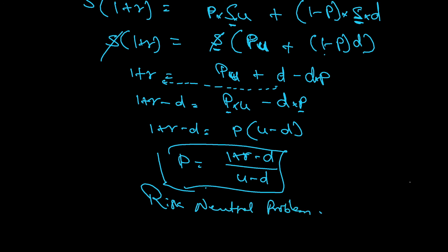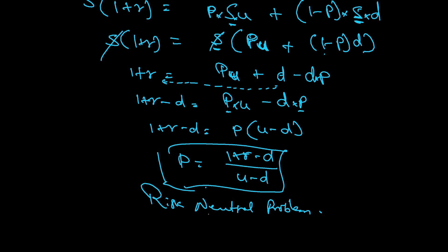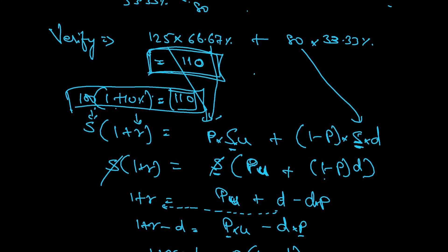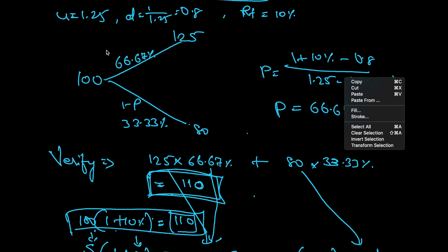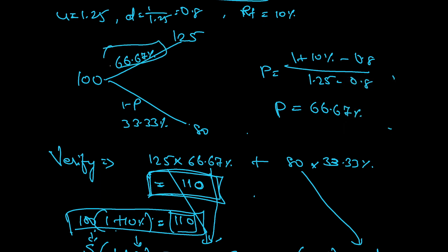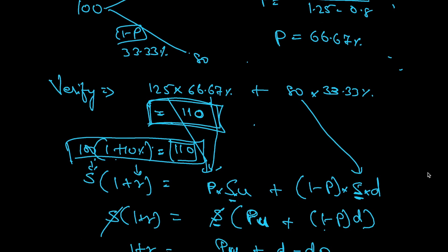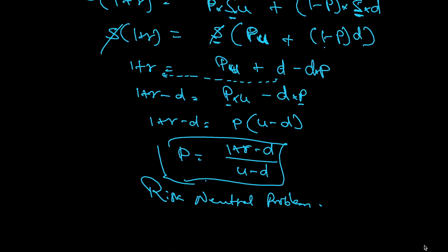This probability p is for the uptick. For the downtick, the probability is 1 minus p, as we demonstrated in the example. Thank you.